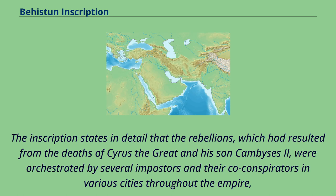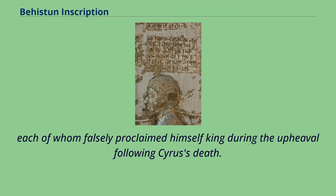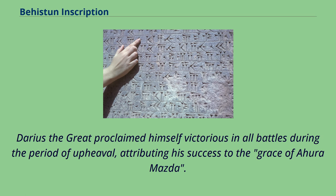The inscription states in detail that the rebellions, which had resulted from the deaths of Cyrus the Great and his son Cambyses II, were orchestrated by several impostors and their co-conspirators in various cities throughout the empire, each of whom falsely proclaimed himself king during the upheaval. Darius the Great proclaimed himself victorious in all battles, attributing his success to the grace of Ahura Mazda.